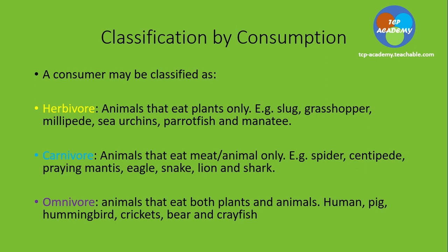We're looking at classification by consumption — the feeding type, how they feed. A consumer may be classified as herbivore, carnivore, or omnivore. Herbivore refers to animals which eat plants only. There's a long list of these organisms: slug, grasshopper, millipedes, sea urchin, parrotfish, and of course our manatee of the Caribbean water.